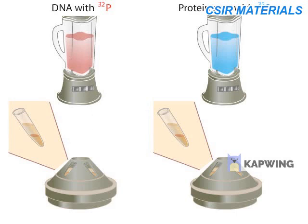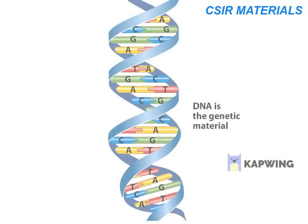Hershey and Chase found that most of the P32 is in the pellet with the bacteria, while most of the S35 is in the supernatant fluid with the viruses. Because the P32 labeled the DNA, the scientists concluded that DNA, not protein, enters bacterial cells and directs the assembly of new viruses. That is, DNA is the genetic material.